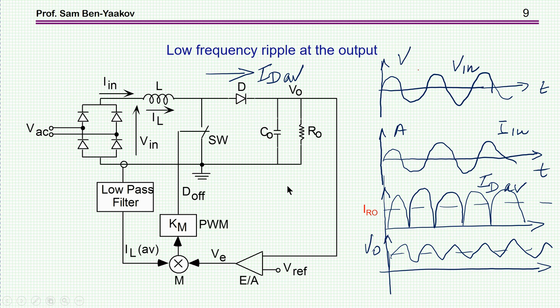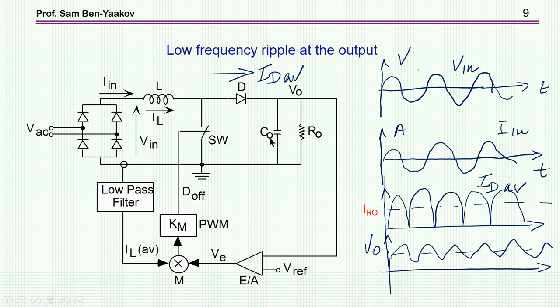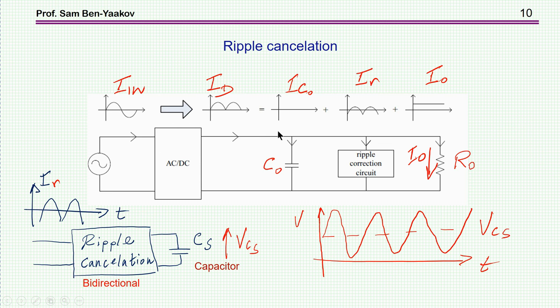The output voltage is high — for a 230-volt AC input, this will normally be around 400 volts. So we need a 400-volt capacitor, and the capacitance turns out to be fairly large, depending on the power level. In most cases, you need an electrolytic capacitor. An electrolytic capacitor is large, bulky, and has a relatively short lifetime due to the high temperature environment. This is really undesirable, and you'd like to eliminate it if possible. So here comes the concept of ripple cancellation.